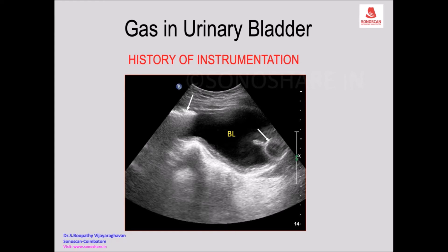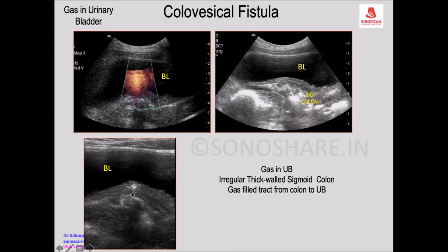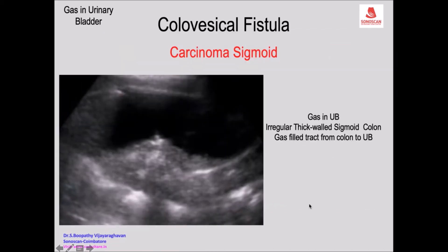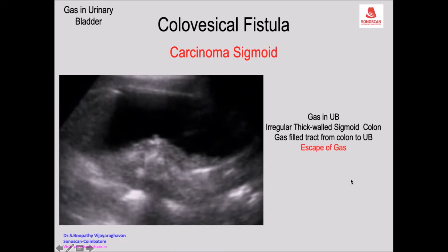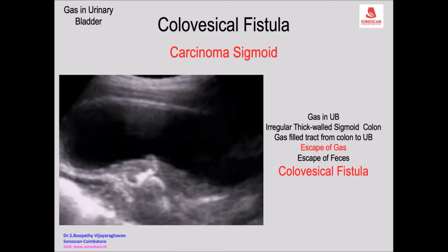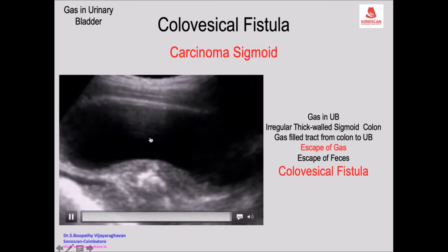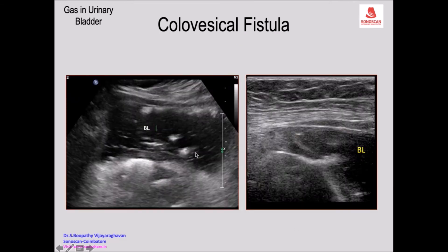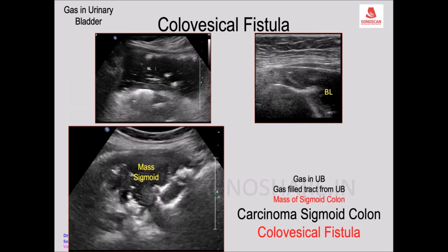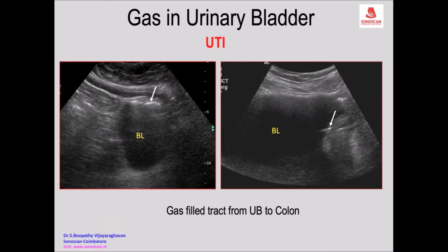If there is no catheterization history, look at the sigmoid colon - you should suspect a colovesical fistula. You also see fecal masses escaping into and also fecal masses present in the urinary bladder. When you see a tract extending, you can give a diagnosis of carcinoma of sigmoid colon with a colovesical fistula, as there is a slightly thick-walled colon.